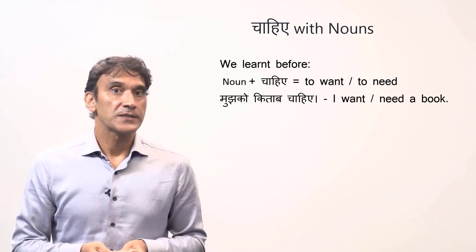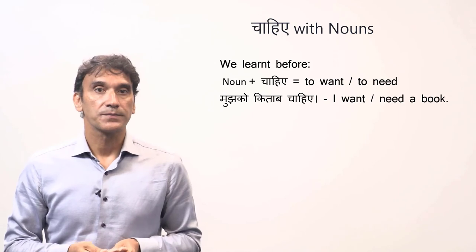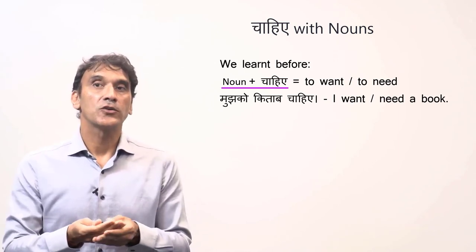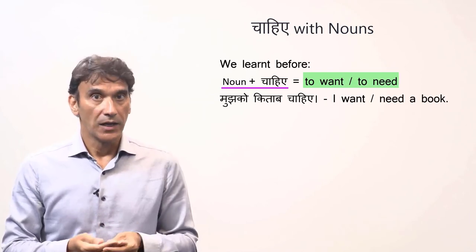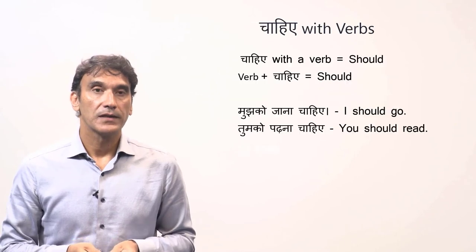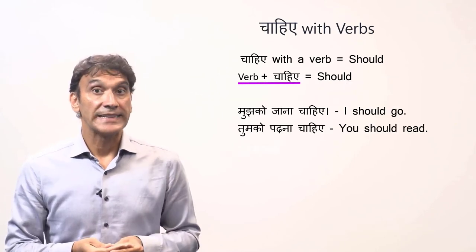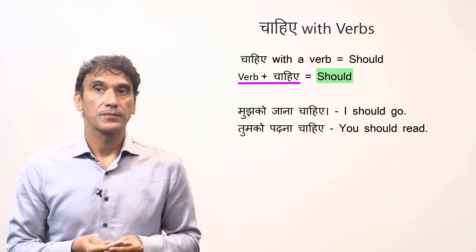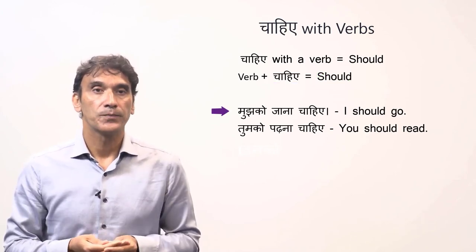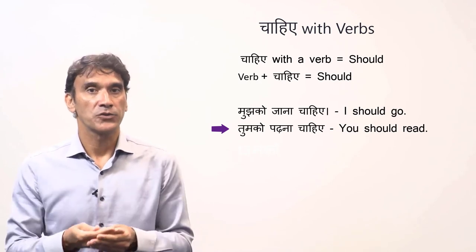The next model verb is chahiye. In fact, it is not a verb — it is a phrase, a type of construction. In a previous grammar point, we took chahiye with nouns, where it meant want and need. For example: 'mujh ko kitab chahiye' — I need a book, I want a book. The phrase chahiye can also go with a verb, in which case it means should. For example: 'mujh ko jana chahiye' means I should go; 'tum ko padhna chahiye' means you should read.